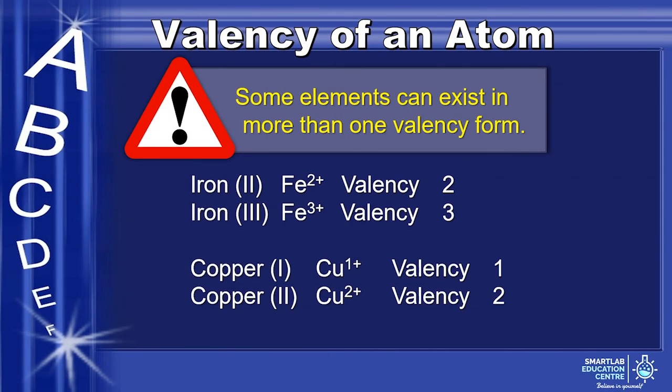There are exceptions. Some elements can exist in more than one valency form. Iron 2, valency is 2. Iron 3, valency is 3. Copper 1, valency is 1. Copper 2, valency is 2.